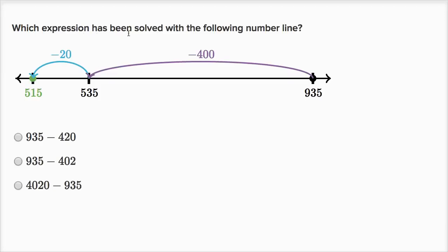Which expression has been solved with the following number line? We're starting at 935, and then we're going to subtract 400, and then we're going to subtract 20. So this is 935 minus 420. That choice right over there.